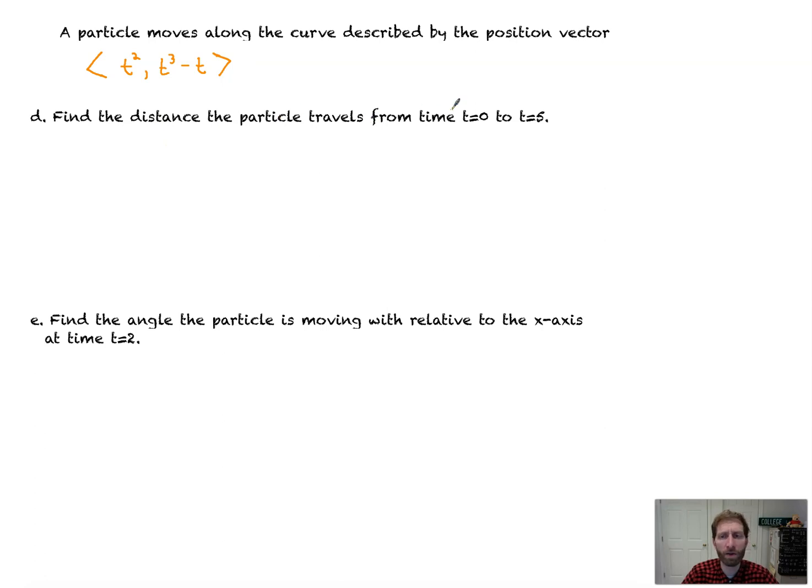We're going to keep going with these ideas. This says find the distance the particle travels from t equals 0 to t equals 5. Now, remember that that's the integral from a to b, which in this case is going to be from 0 to 5, of the square root of x prime of t, which we already know is 2t. So that's x prime of t squared plus y prime of t squared, which is going to be 3t squared minus 1 squared dt. Now, this is pretty darn gnarly, and I don't believe it's going to factor out so beautifully. So I'm going to use my calculator. And there you have it, through the magic of a little bit of a calculator action. We have about 124.147 or 124.148 units. So that's the distance we travel from 0 to 5.